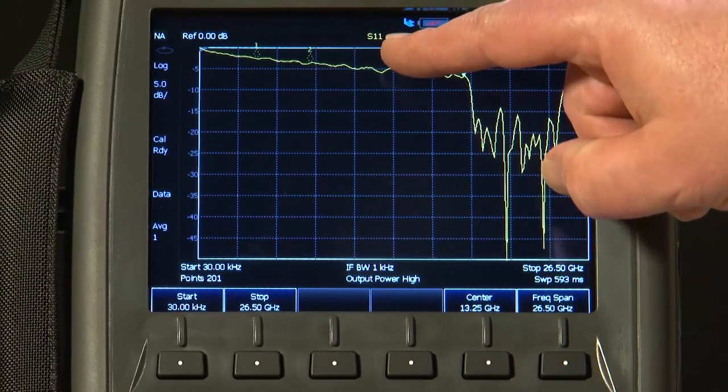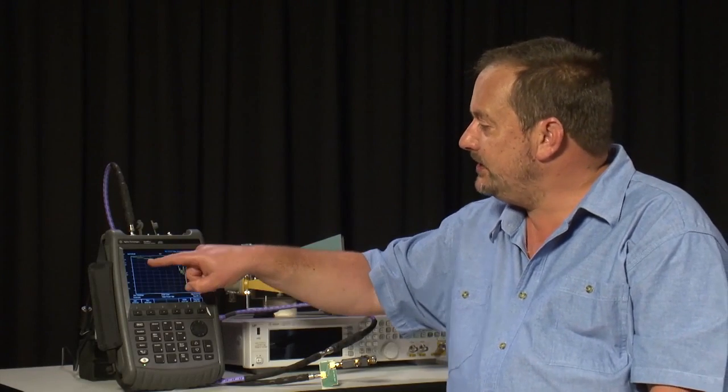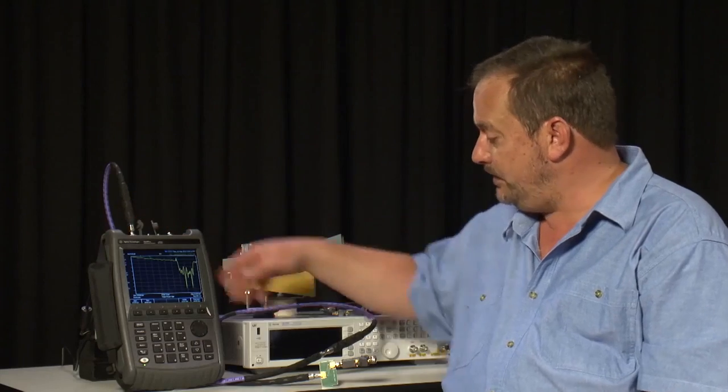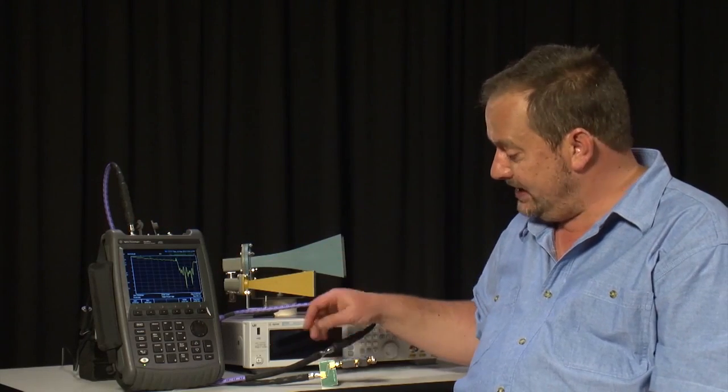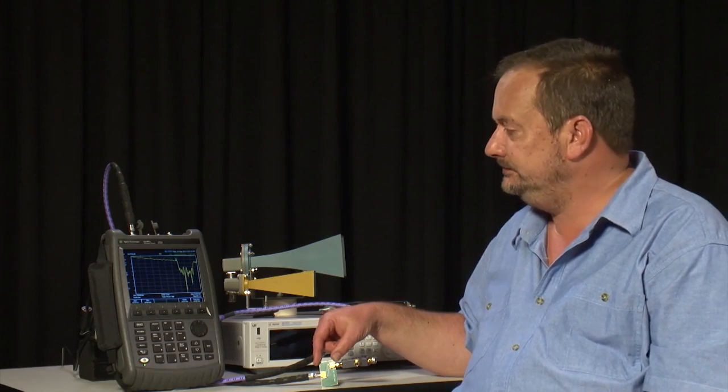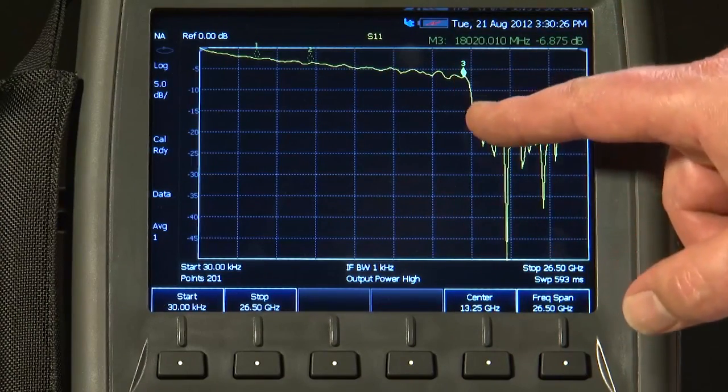You can see here on the display we are measuring S11. That is the return loss of the entire measurement system. So this response here is in fact the return loss of both of my purple cables, the connectors, the launch onto the filter and the filter itself. And the first thing you'll notice is that there is quite a bit of ripple on the return loss trace.